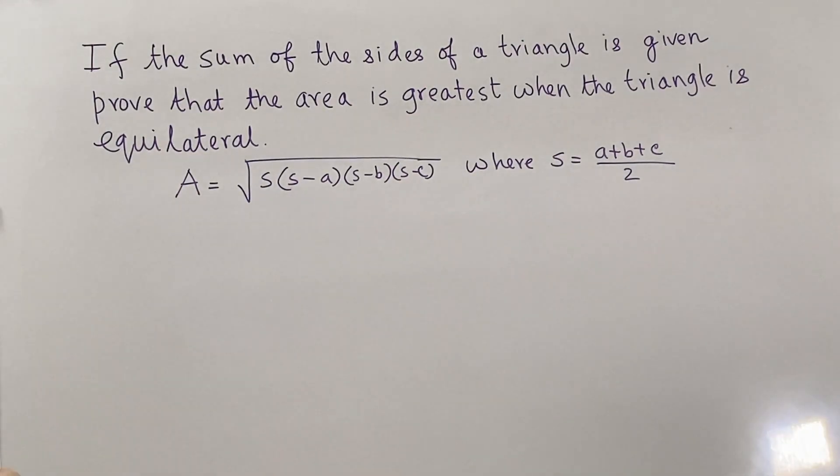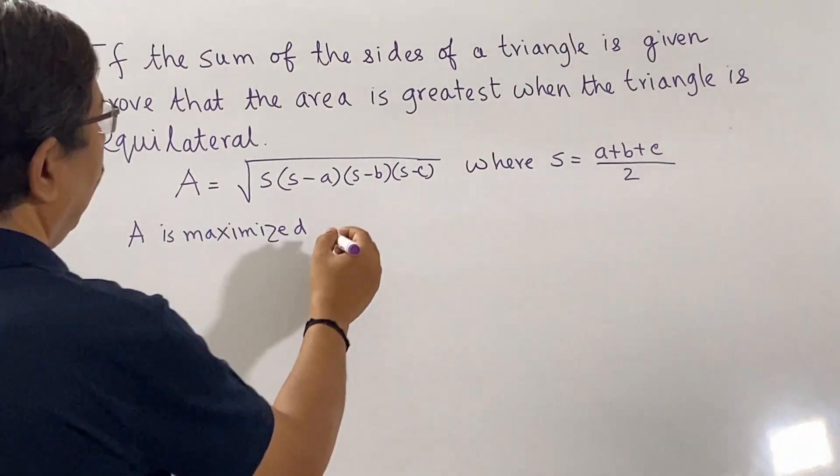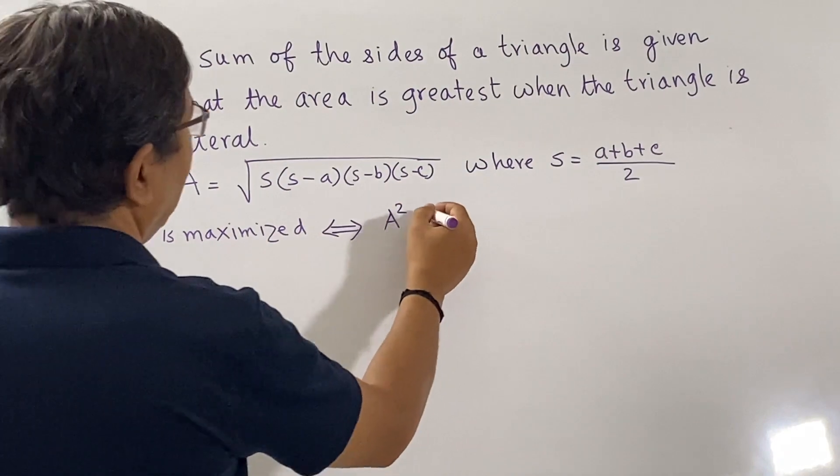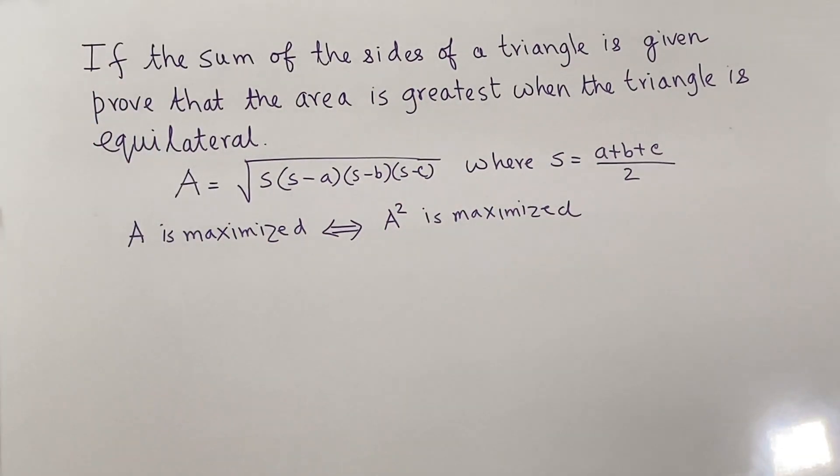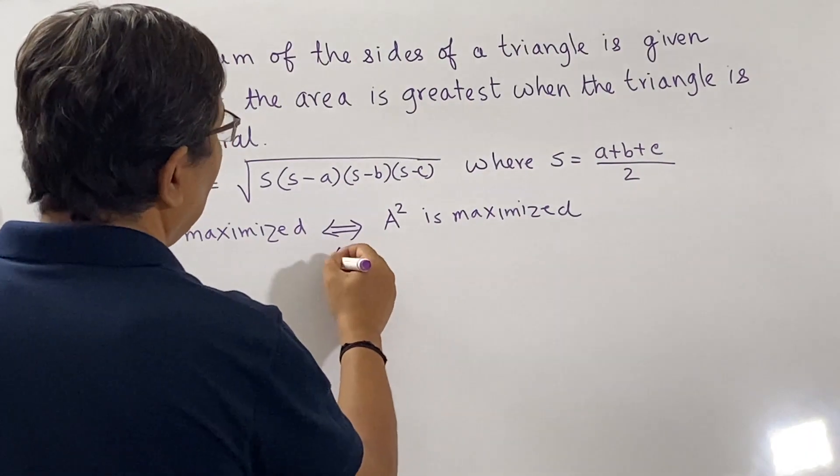Now A is maximized if and only if A squared is maximized, since area is a positive number. And if we divide A squared by a constant S, remember that the perimeter of the given triangle is fixed, so therefore the semi-perimeter is also fixed. So if I divide A squared by S, that should also be maximized.